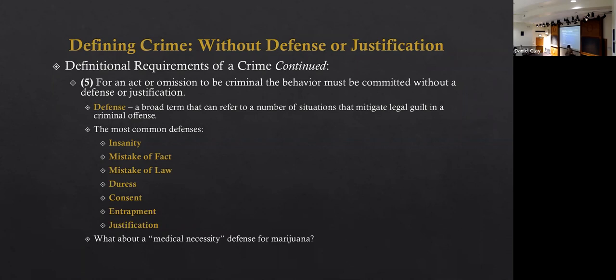Duress is basically when, if you did commit the crime, something even worse was going to happen. For example, you get a phone call: 'I have your family held hostage — I'm going to kill them if you don't go rob that bank, and don't tell the police.' You go rob the bank — that's bank robbery, that's a crime — but you can plead duress. You didn't want to do it, but something worse was going to happen.